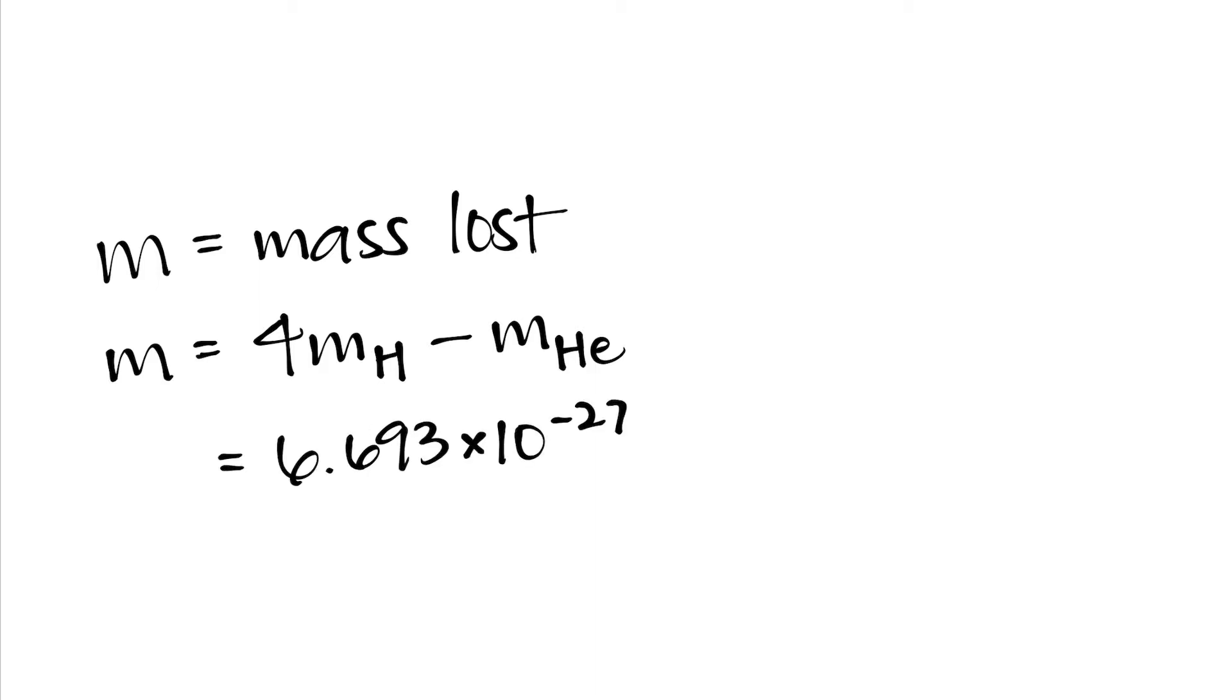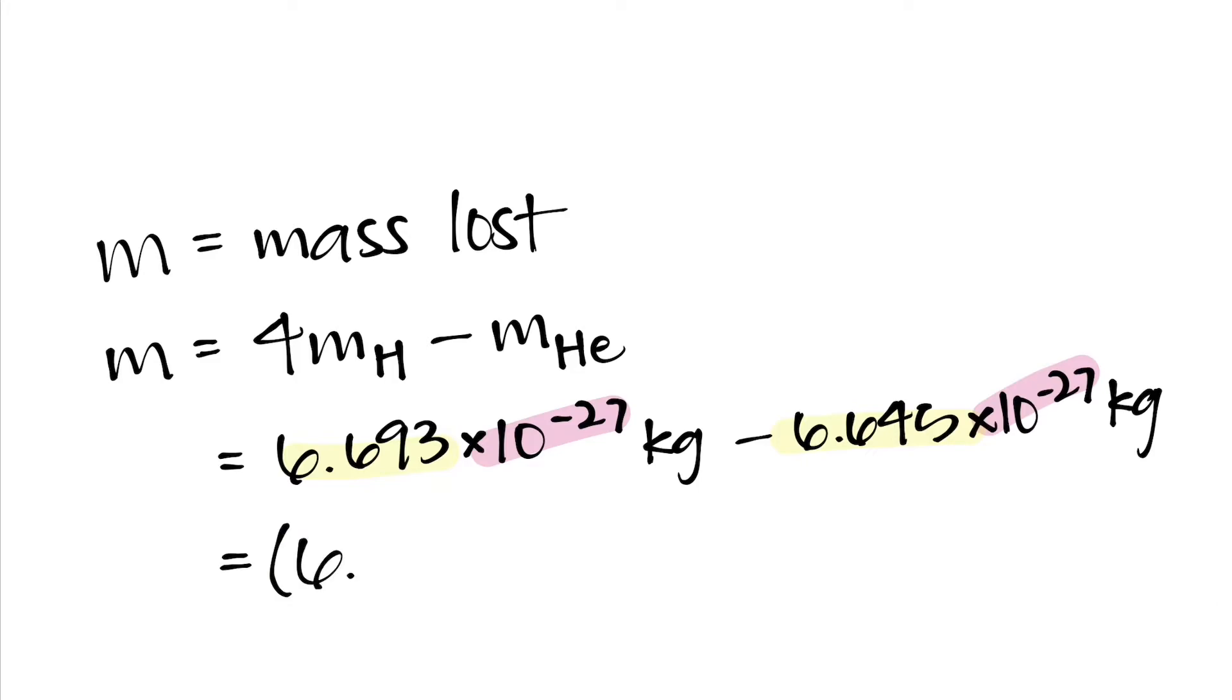M is the mass lost in the process. To determine its value, we subtract the mass of helium from the mass of the four hydrogen atoms. Replacing the variables with our values, we have 6.693 times 10 to the power of negative 27 kilograms minus 6.645 times 10 to the power of negative 27 kilograms. Notice that since both numbers are multiplied by a factor of 10 to the power of negative 27, we can factor that out and bring the 6-point-somethings together in parentheses.